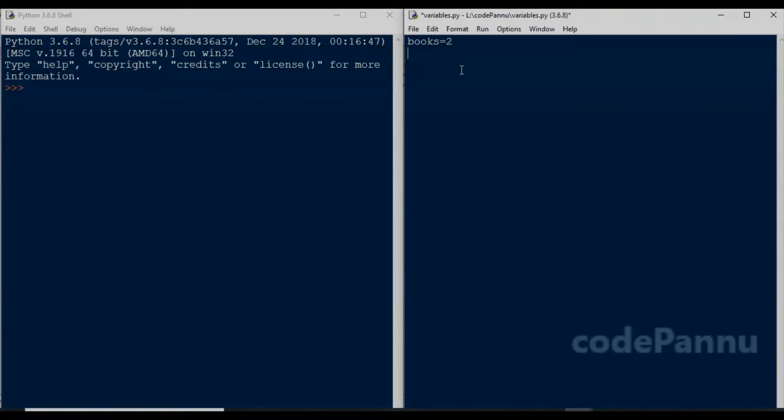So Python will save this variable called books and the value 2 in the computer memory. And that happens when we run the code.